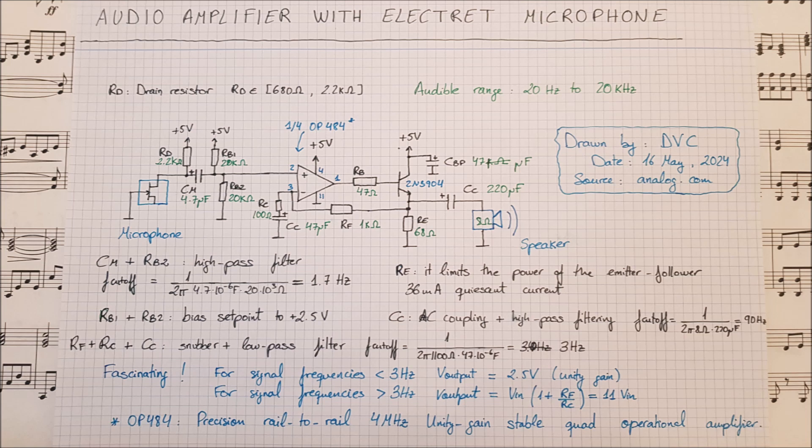We use a voltage divider comprised of resistors RB1 and RB2. RB1 and RB2 set the reference voltage for the non-inverting input of the non-inverting amplifier, which is based on the OP484. The OP484 is a really nice component — it's a precision, rail-to-rail, 4 MHz, unity-gain-stable, quad operational amplifier. What it means is that it's low noise, it can go from 0 to 5 volts when you have that voltage applied to it, and it's fairly high bandwidth, meaning we are not going to have a problem amplifying our acoustic signal.